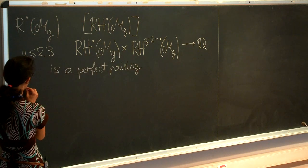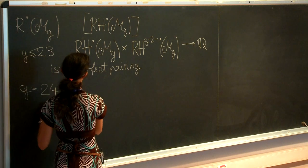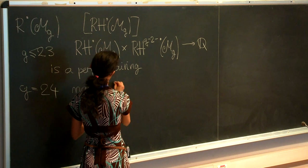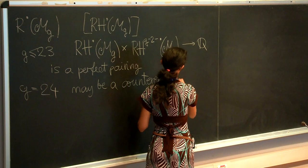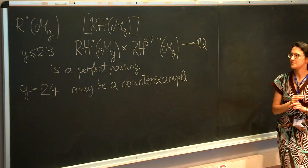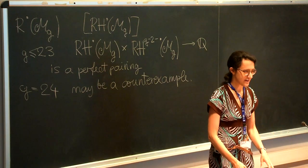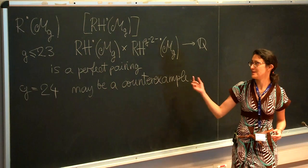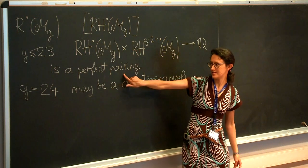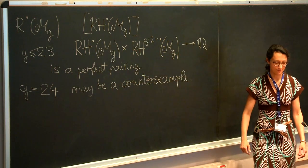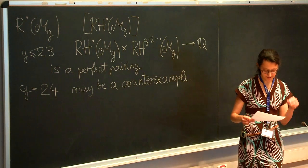As we discussed, there is an expectation that if we take g equal to 24, maybe a counterexample arises — something special stops happening at this point. Around the time I got my PhD, the existence of such a perfect pairing was widely expected. By now people have become very skeptical about this.